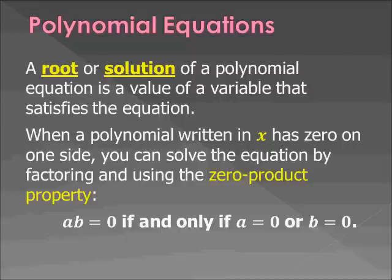The zero product property from chapter 1: a times b equals 0 if and only if a equals 0 or b equals 0. That makes sense — whenever you have something that multiplies into 0, one or both terms have to be 0. That's basically what we'll be using to solve these problems today.